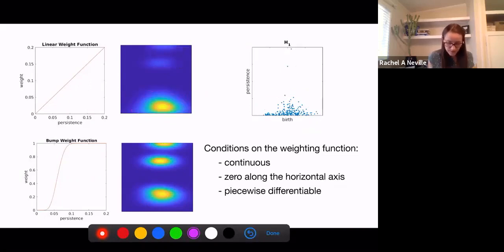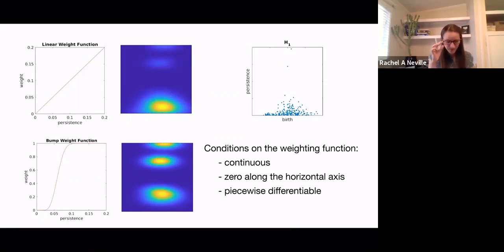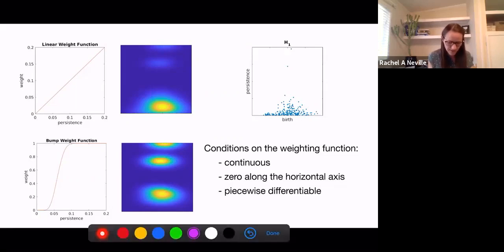Another choice that we might use is a bump function. So if you want to emphasize these larger persistence features, maybe you would choose a bump function that weights these much more heavily. And in this example weights the points with small persistence very lightly. And then the middle persistence points are kind of in this middle range. And so there's maybe some more interesting features there.